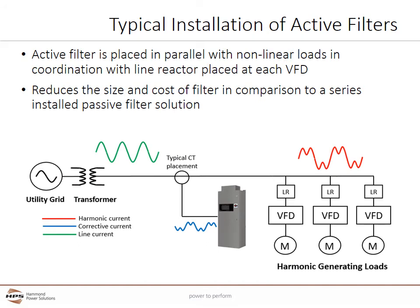An active filter is placed in parallel with nonlinear loads in coordination with line reactors placed at each VFD. This is less costly and more flexible than using series-placed passive filters at each VFD. Line reactors help mitigate a portion of the current harmonics for less cost per amp than an active harmonic filter, but line reactors can't mitigate the current's total harmonic distortion to below 5% — for that, the active harmonic filter is needed. The combination of an active harmonic filter and line reactors is less costly and easier to specify and install versus multiple passive filters, and provides more consistent results over a wider range of loads.